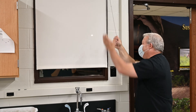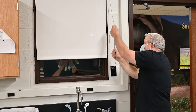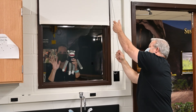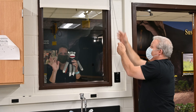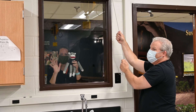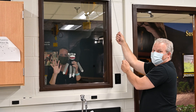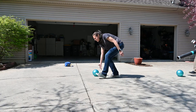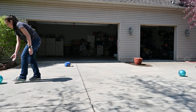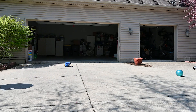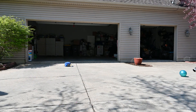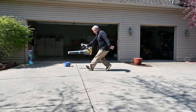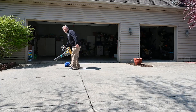Bill is pulling down on the blind. And look who's there — it's Sarah and P.D. on the other side. Sarah is pushing a ball to get it to roll. How's Bill going to push the ball? He's using a leaf blower.